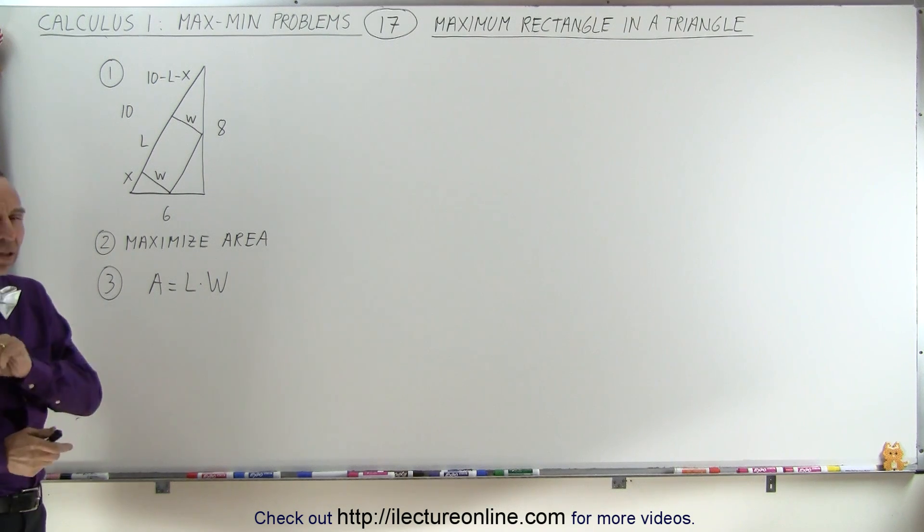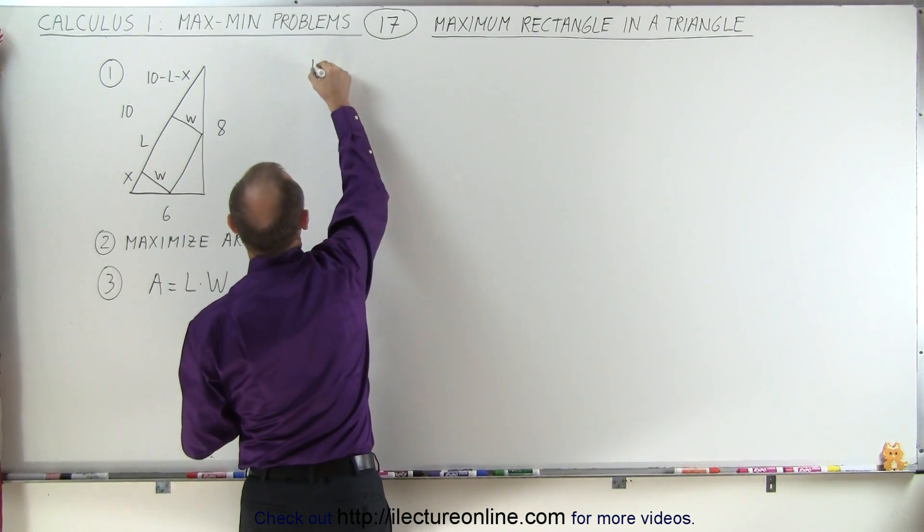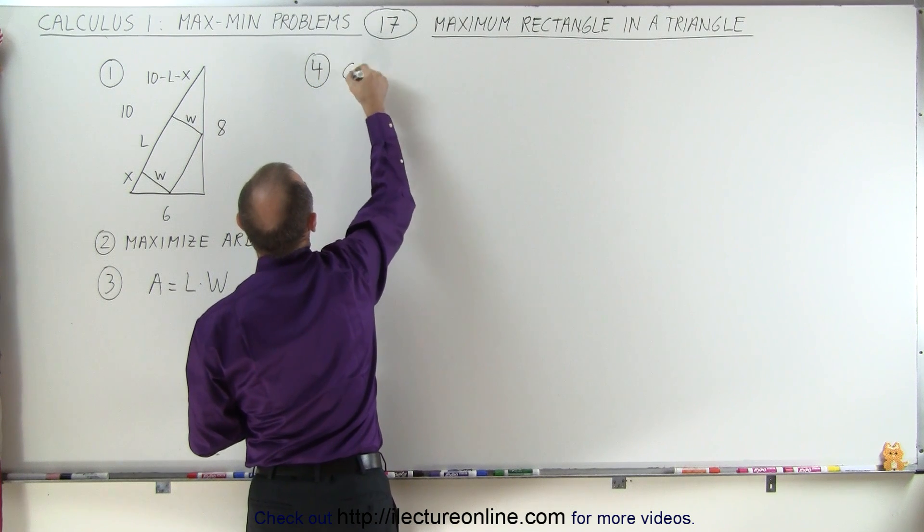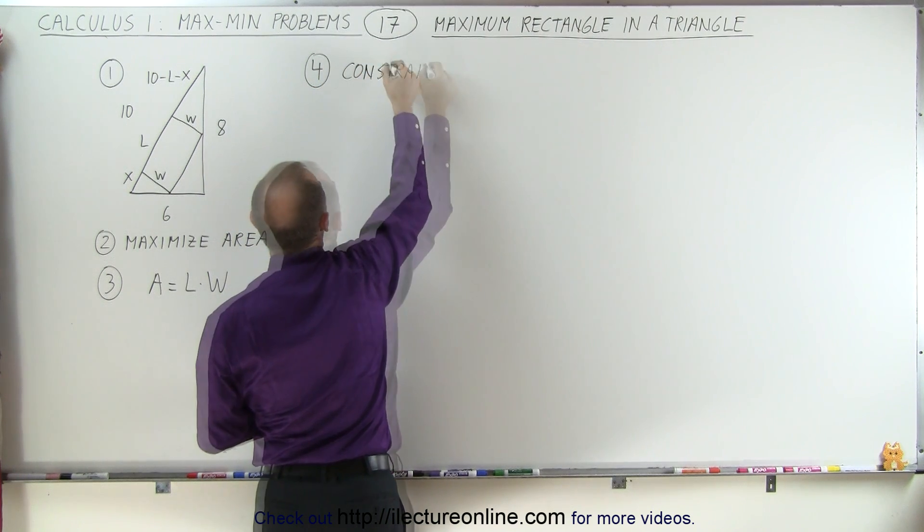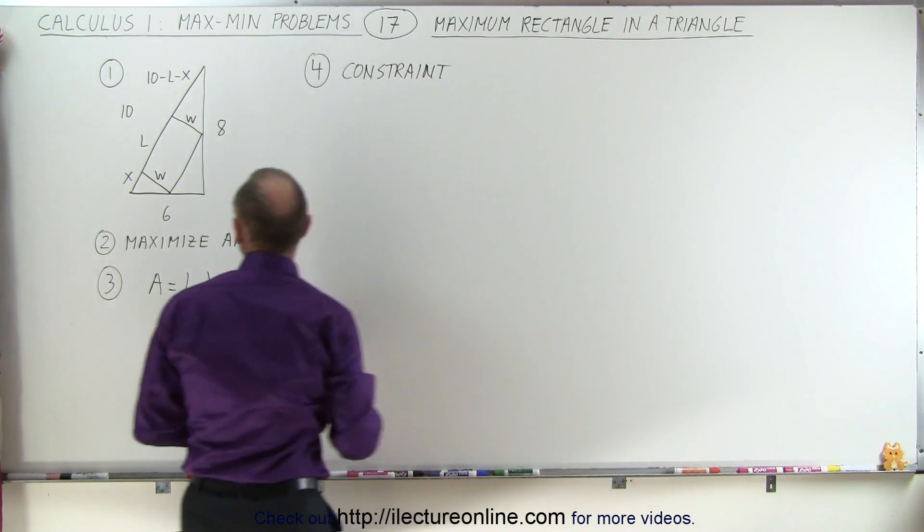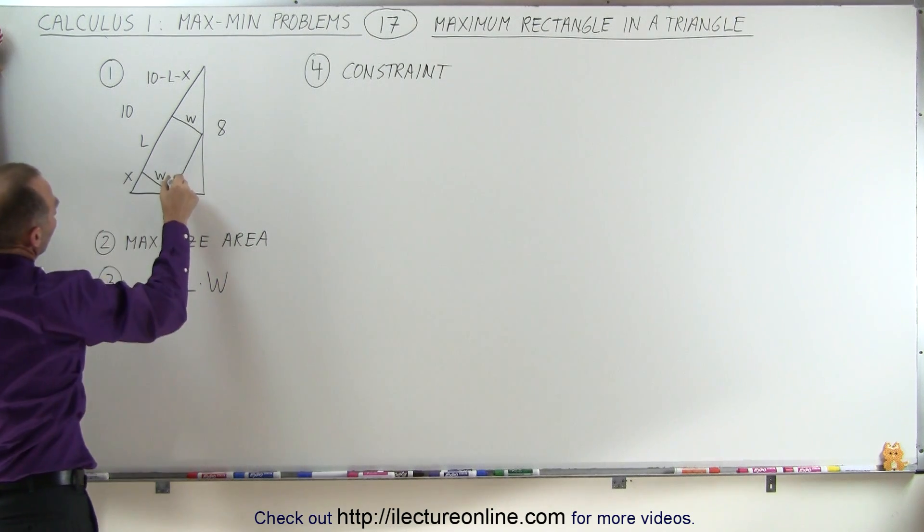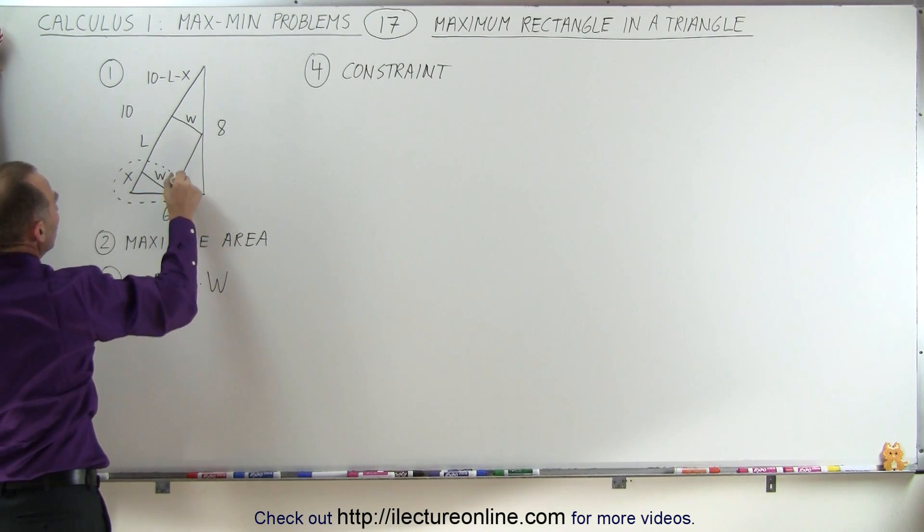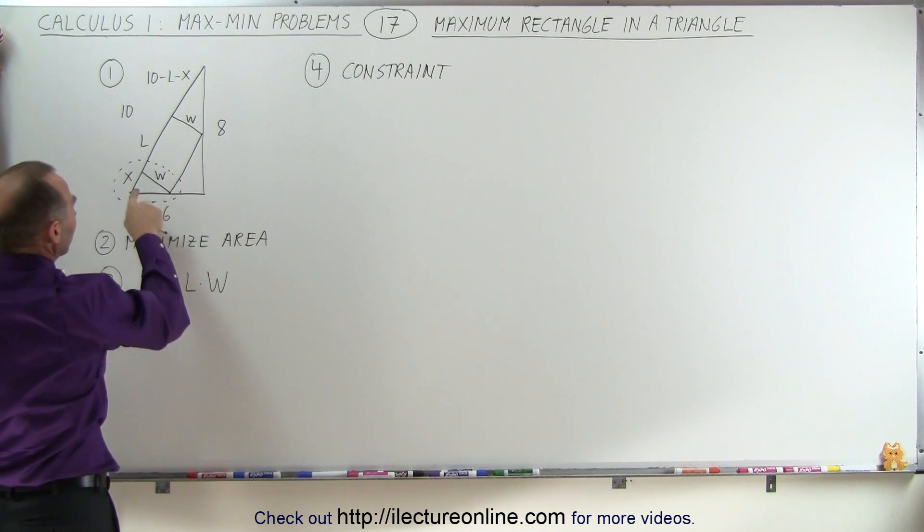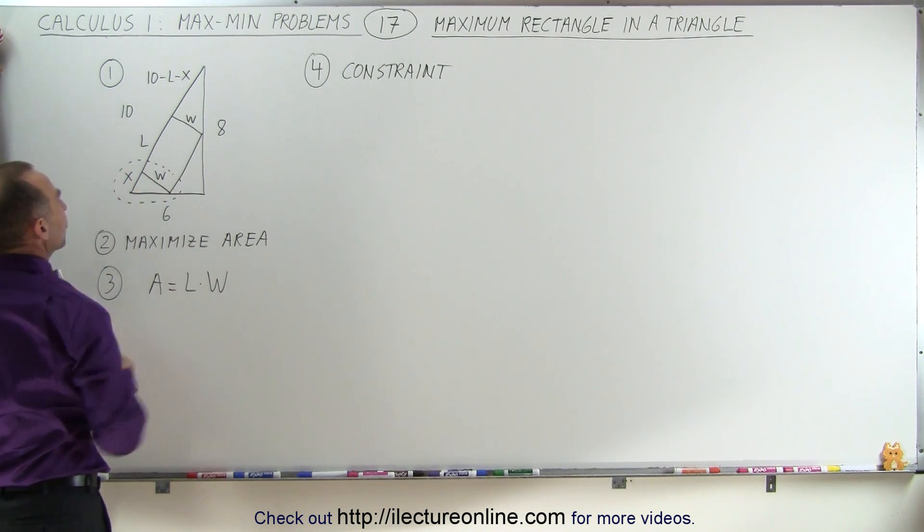That part is a little bit more challenging. So now, on step number 4, we're trying to find the constraint. Well, first of all, let's take a look at this triangle right here. We know, because of similarities, that this also needs to be a 3, 4, 5 triangle.